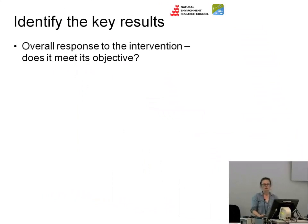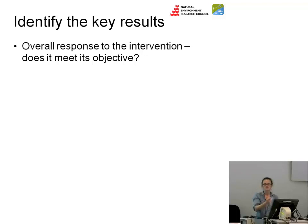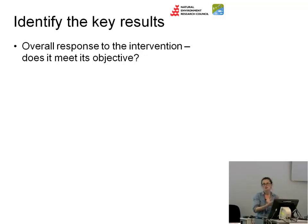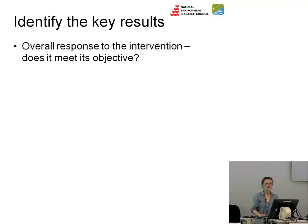You need to identify the key results. The first key messages you present should be about the overall response to the intervention, and you have to keep in mind what the objective of that intervention is. In the case of biodiversity, the objective is to have populations or communities of species that are either increasing or the same as before. In the case of ecosystem services or sustainable farming, the objective might be to reduce chemical inputs or reduce greenhouse gas emissions. You need to be clear about the main objective so that can be your first key message — here's the evidence that this reduces greenhouse gas emissions, say.